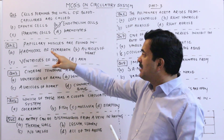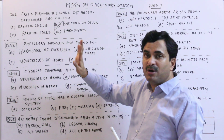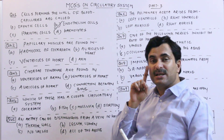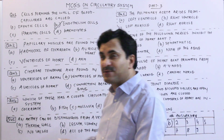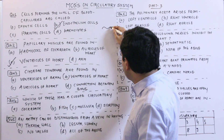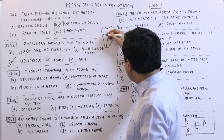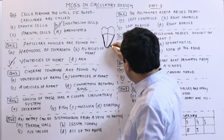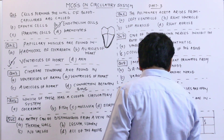The haemocoel of cockroach is not the answer — haemocoel is the cavity of the cockroach. Papillary muscles are associated with the ventricles of the heart, not the haemocoel. If this is the heart and these are the ventricles, then papillary muscles are associated with the wall of the ventricles. So question number two has the answer C.